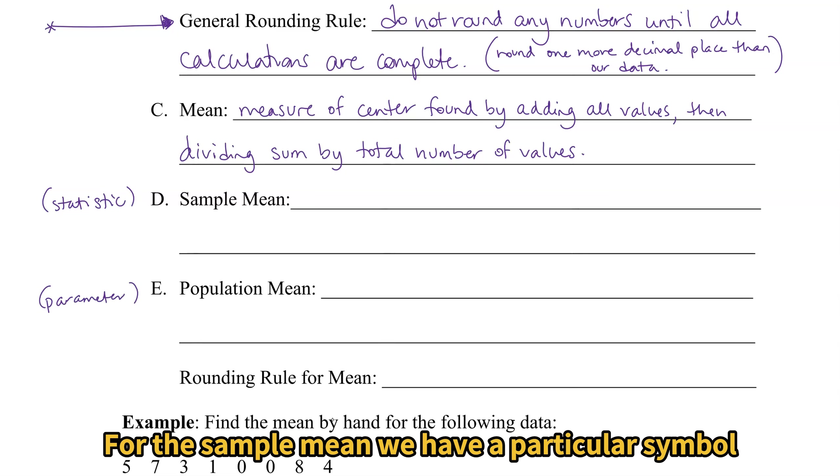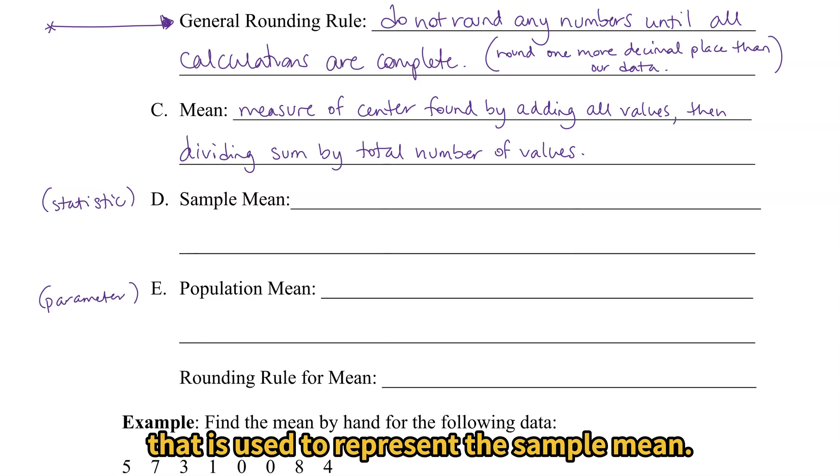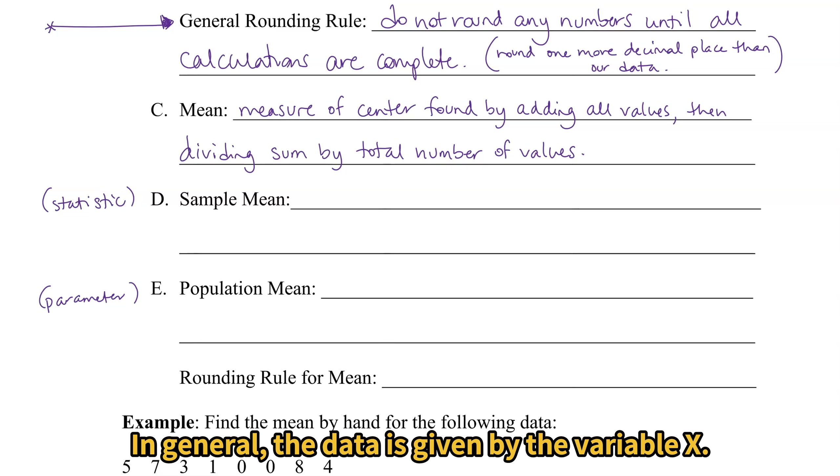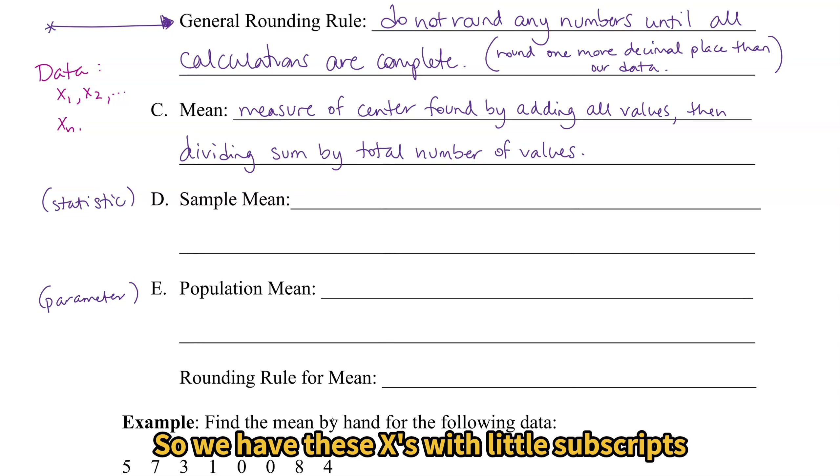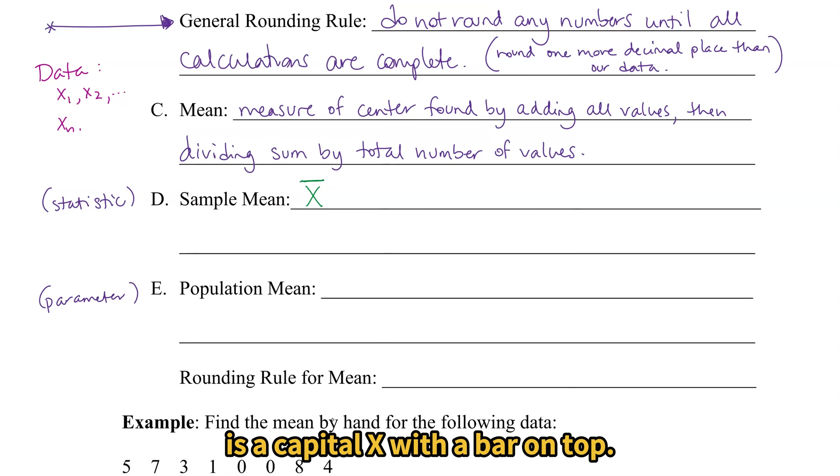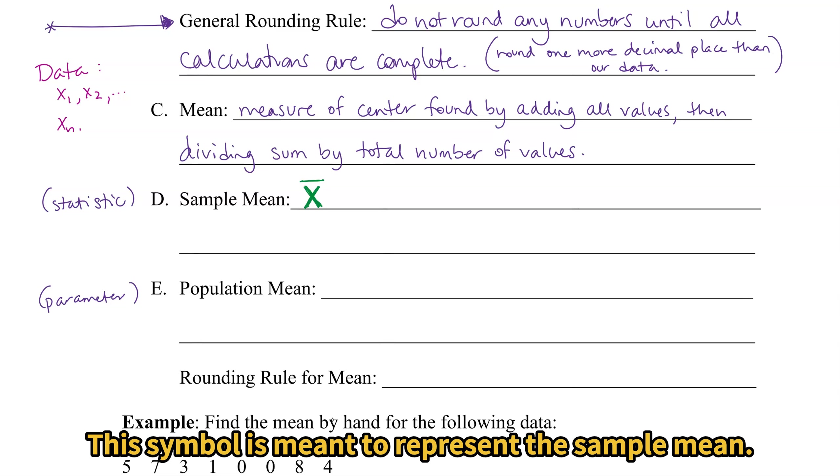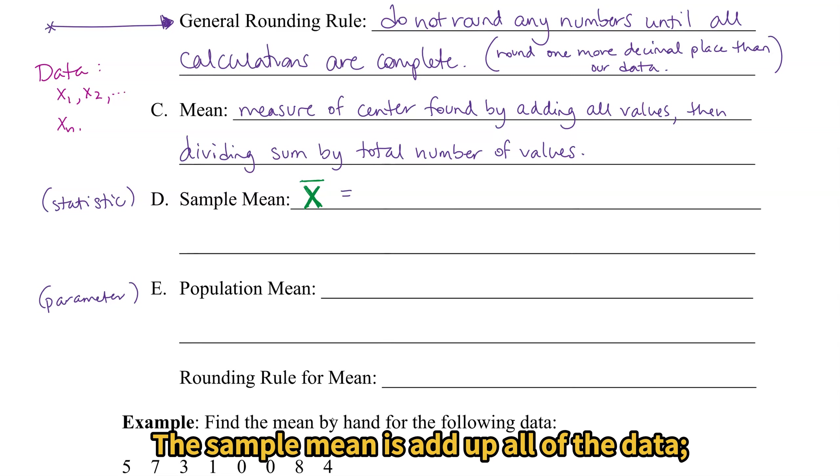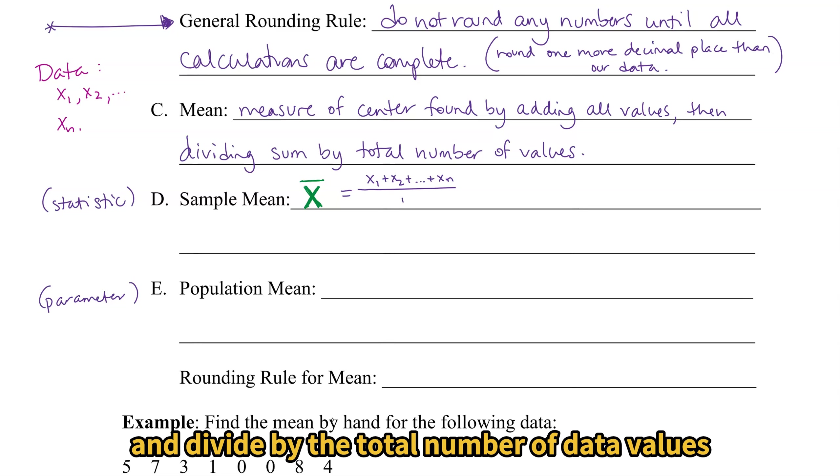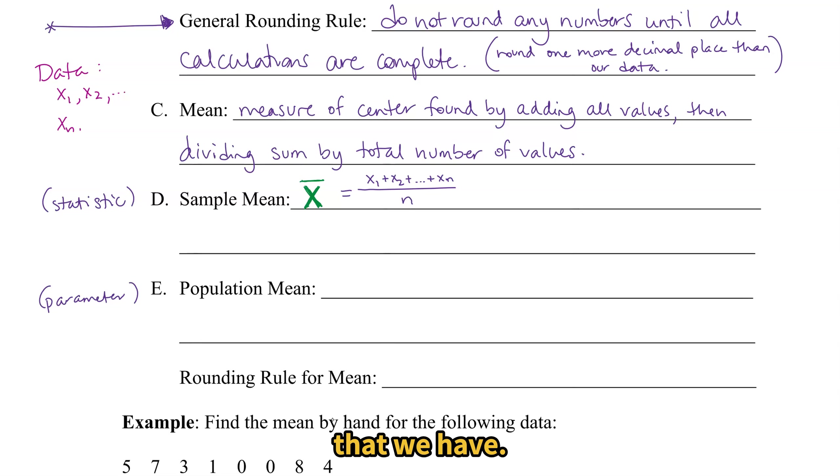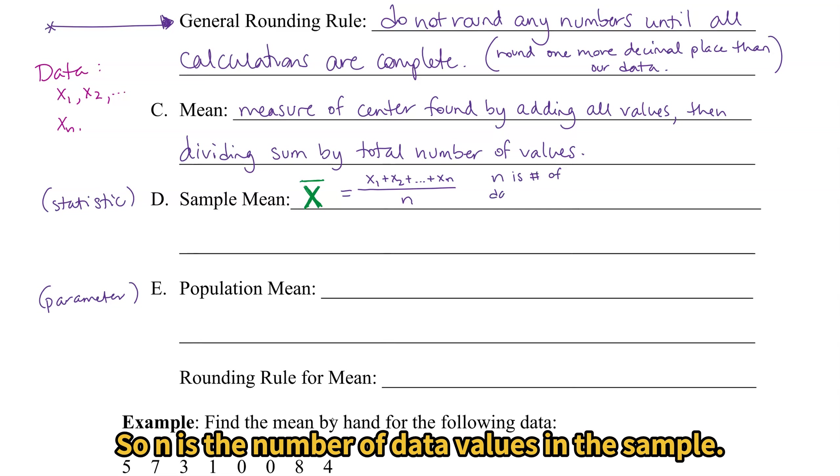For the sample mean, we have a particular symbol that is used to represent the sample mean. In general, the data is given by the variable x. Usually, our data is x1, x2, so forth to some number xn. So we have these x's with little subscripts indicating that they could be different. The sample mean, the symbol used is a capital X with a bar on top. This symbol is meant to represent the sample mean. And it has a formula. The sample mean is add up all of the data, so x1 plus x2 all the way up to xn, and divide by the total number of data values that we have. So n is the number of data values in the sample.